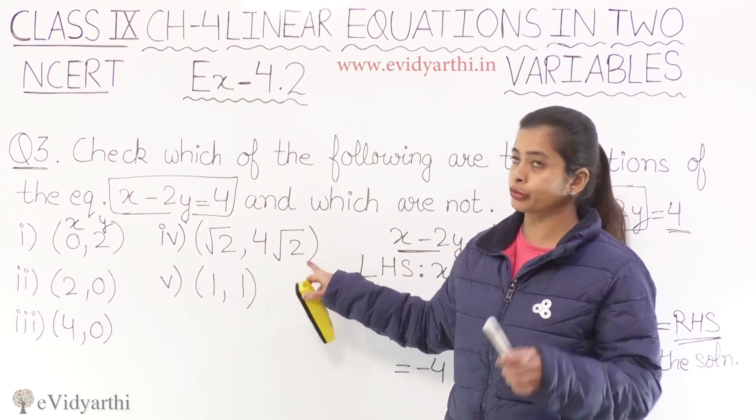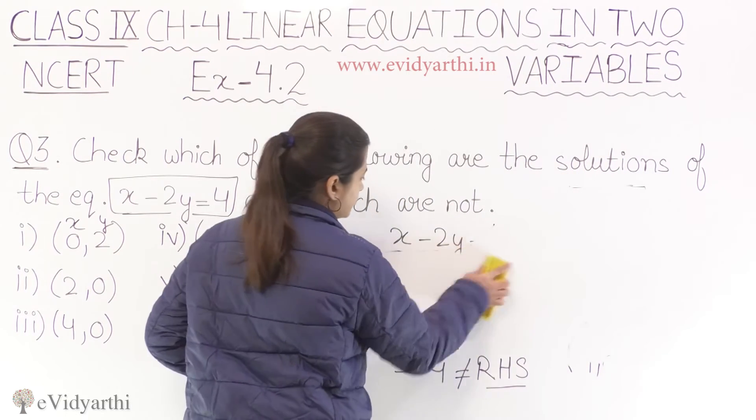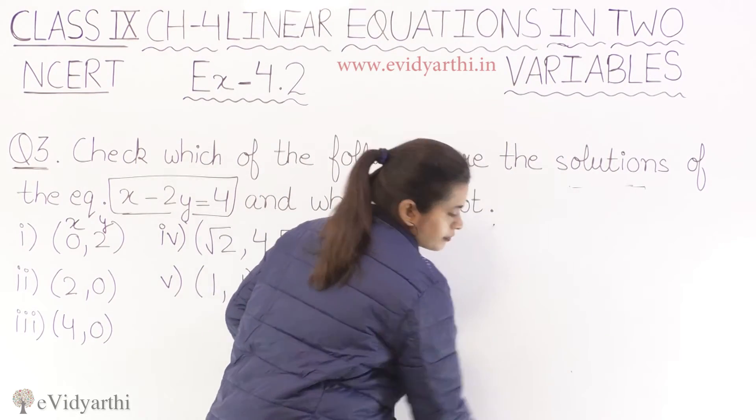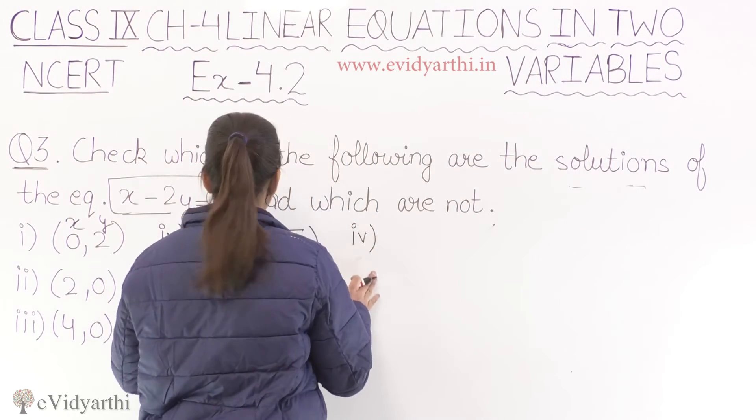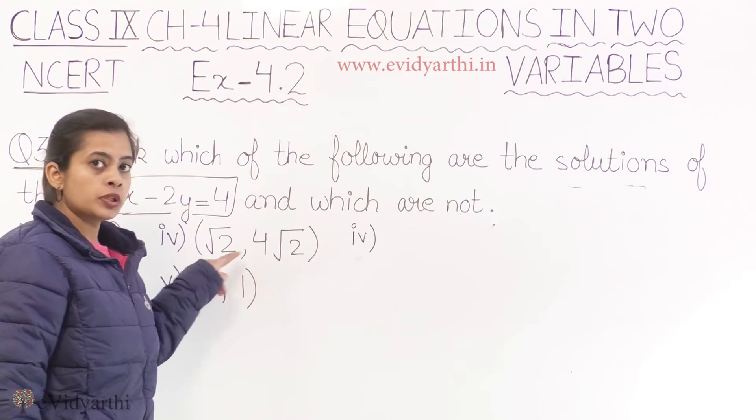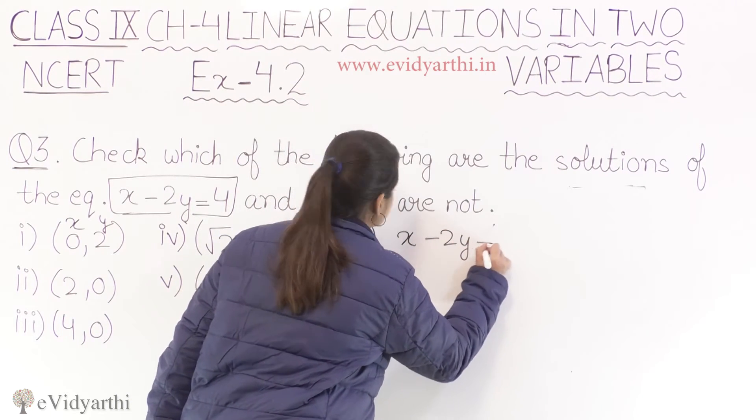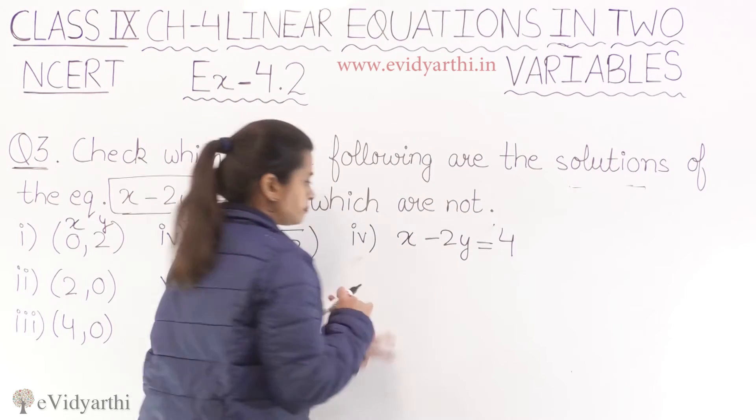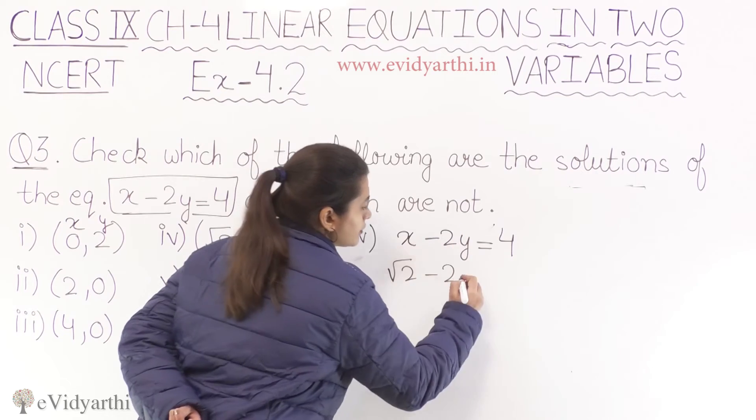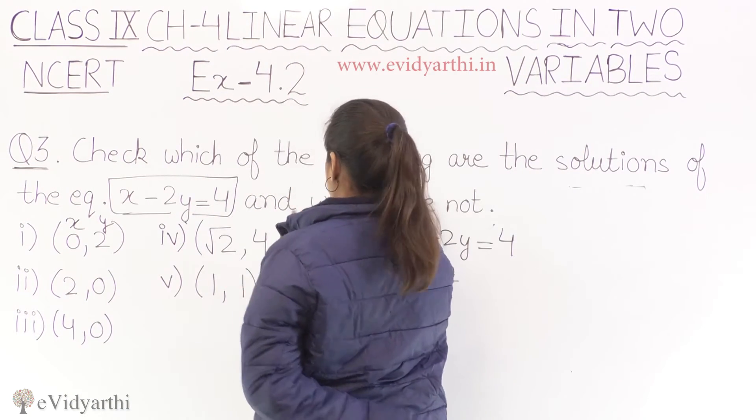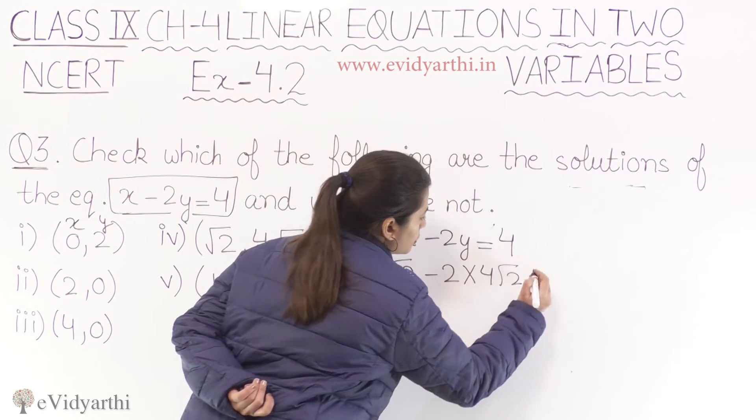What we have? Root two and four root two. Chalo yeh bhi dekh lete hai. How we are going to proceed? First we have to write the equation again. So here we are doing part number four. Part number four mein hame jo values leni hai, that is root two and four root two. Equation hai humara: x minus 2y is equals to 4. X ki value root two hai, rakh diya. Y ki value hai four root two. Four root two se multiply ho raha hai.